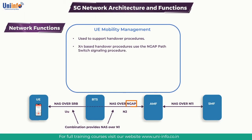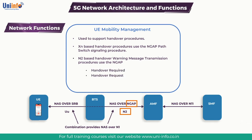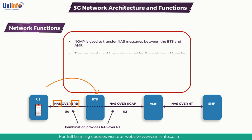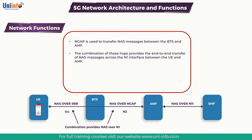The Xn interconnects a pair of 5G base stations, similar to the X2 interface used by 4G. N2-based handover warning message transmission procedures use the N-GAP handover required, handover request, handover command, and handover notify signaling procedures. N-GAP is used to transfer NAS messages between the base station and AMF, while a Signaling Radio Bearer (SRB) is used to transfer NAS messages between the UE and base station. The combination of these hops provides the end-to-end transfer of NAS messages across the N1 interface between the UE and AMF.